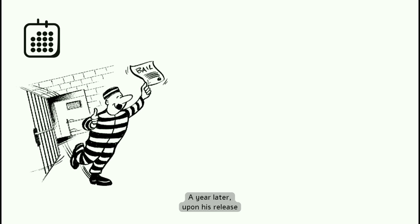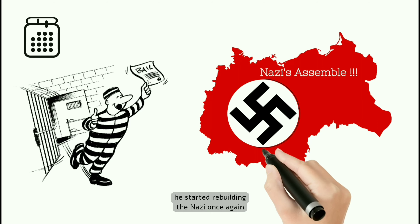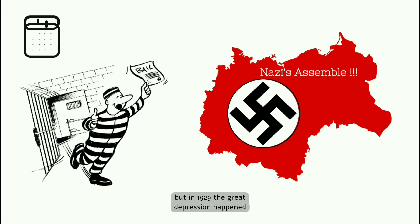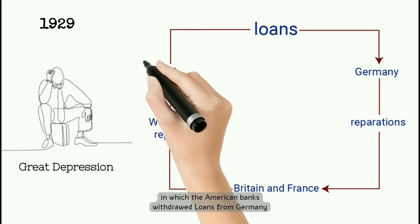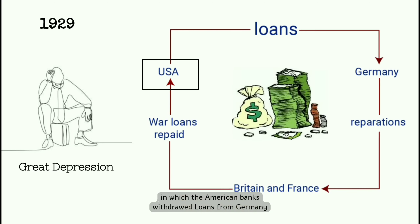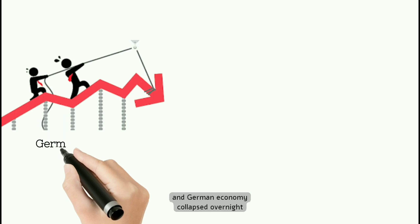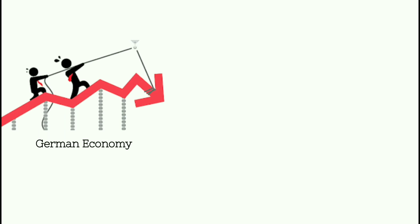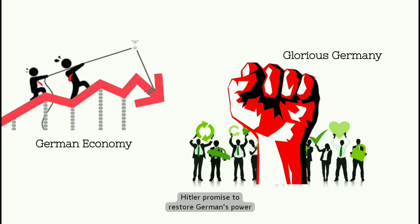A year later, upon his release, he started rebuilding the Nazis once again. But in 1929, the Great Depression happened, in which the American banks withdrew loans from Germany, and the German economy collapsed overnight. Hitler promised to restore Germans' power.